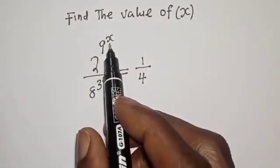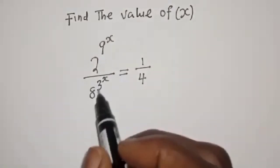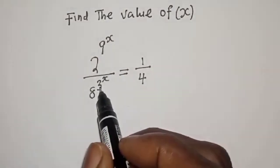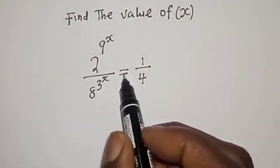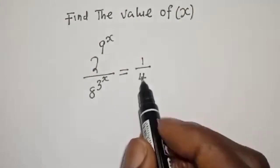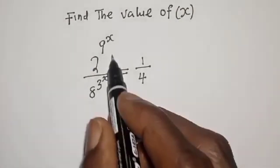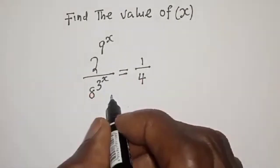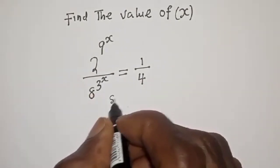2 raised to power 9 raised to power s, divided by 8 raised to power 3 raised to power s, is equal to 1 over 4. What is the value of s?